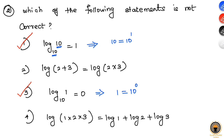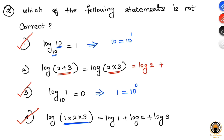The property that multiplication of numbers equals addition of their logarithms is correct. But the second option states that separate logarithmic additions equal a value — specifically log 2 plus log 3 is claimed incorrectly.